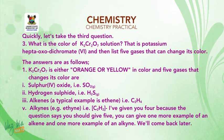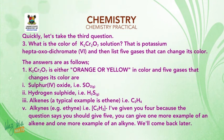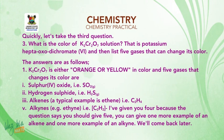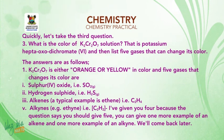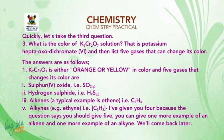Five gases that change its color are: number one, sulfur dioxide (SO₂) gas; number two, hydrogen sulfide gas (H₂S); number three, alkenes — a typical example is ethene (C₂H₄); and number four, alkynes — a typical example is ethyne (C₂H₂). I've given you four because the question says give five — you can add one more example of an alkene or an alkyne.